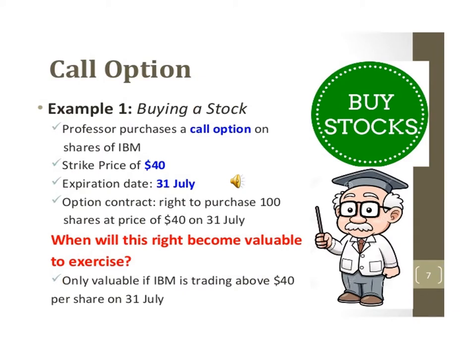We can use a call option to purchase shares with a strike price of $40 and an expiration date of July 31. Our option will be valuable if the shares are trading above $40 per share on July 31st.